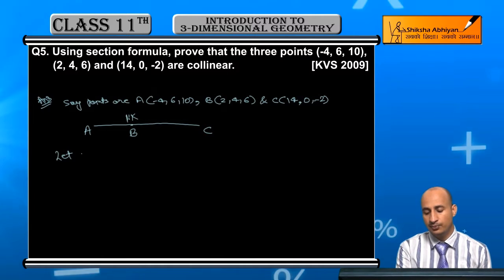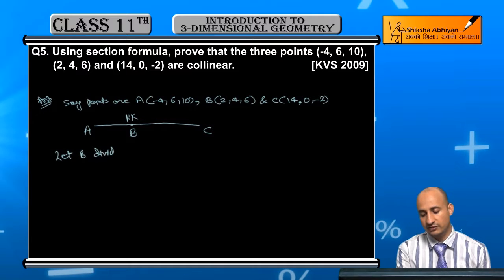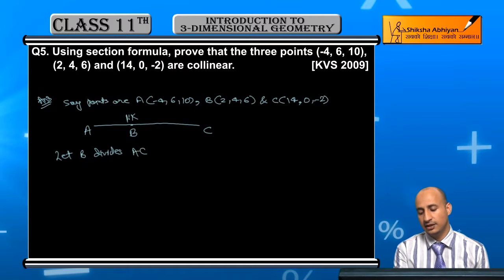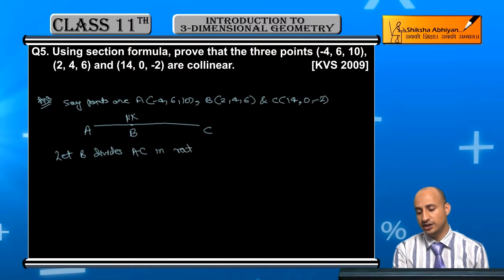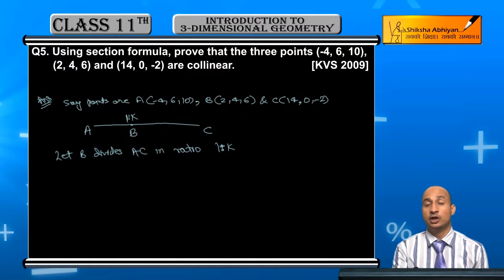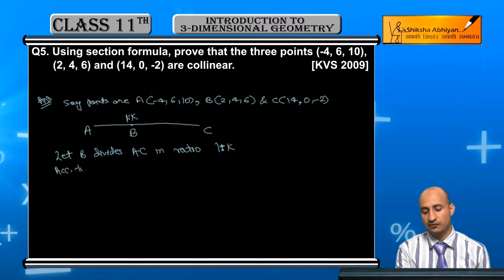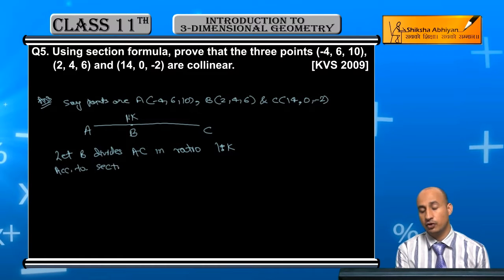So, let B divide AC in ratio 1 is to k. According to section formula, according to section formula.